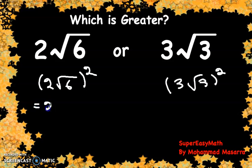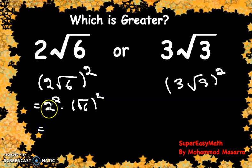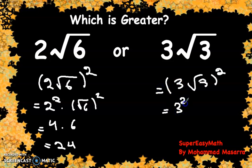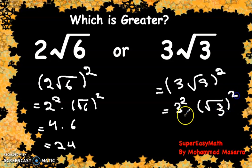The first one is equal to 2² times (√6)², which equals 4 times 6, equal to 24. And here we get 3² multiplied by (√3)².